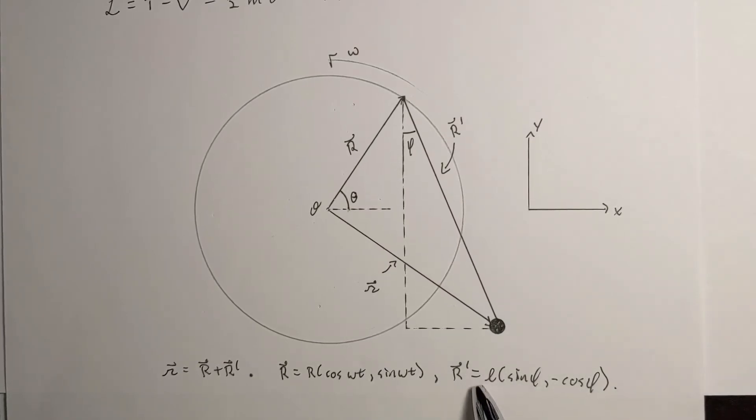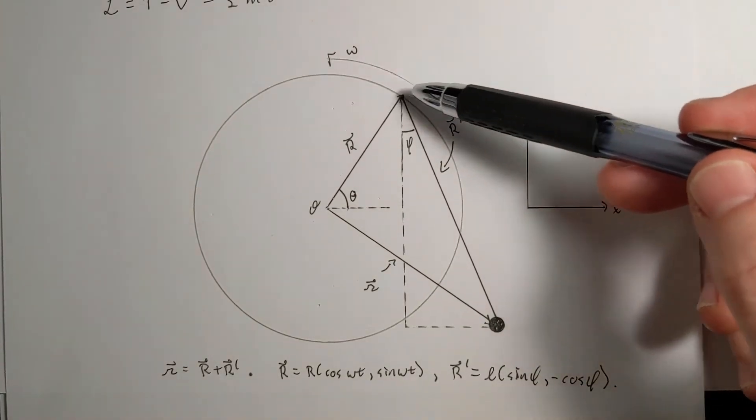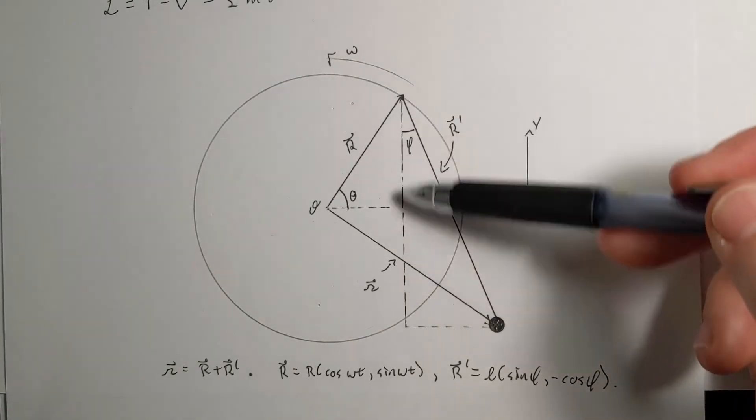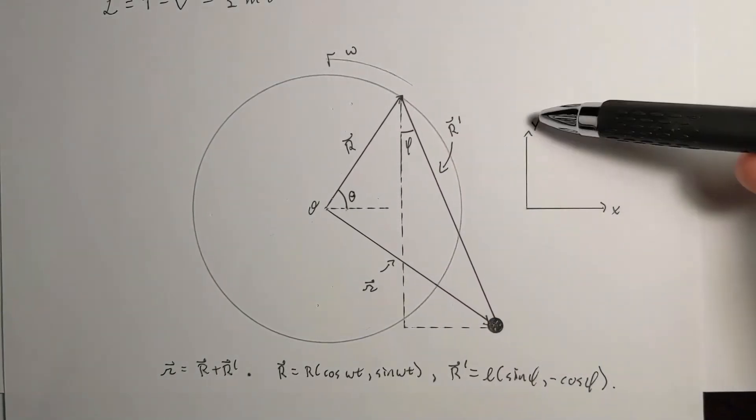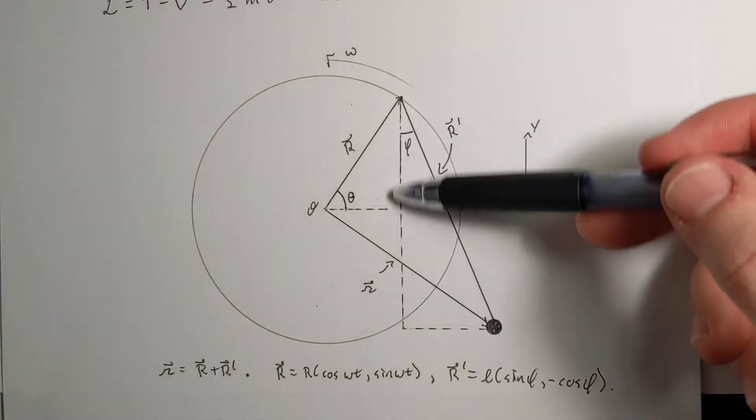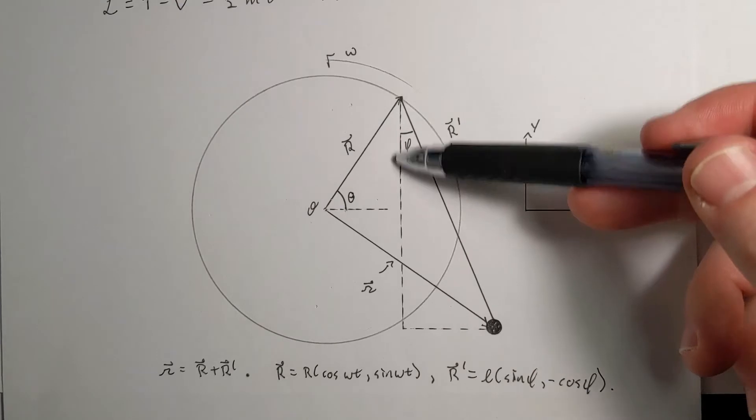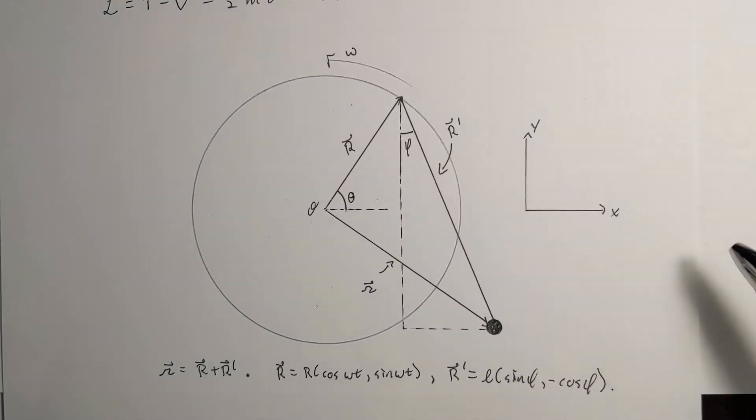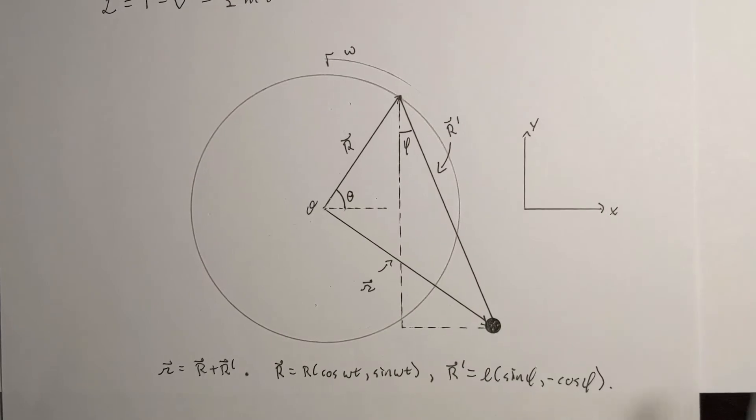And R prime is going to be negative in the y direction, because I've defined this to be my plus y. So really, we can see that's just minus L cosine of phi. And my x direction, which was defined to be positive, is going to be L sine phi.